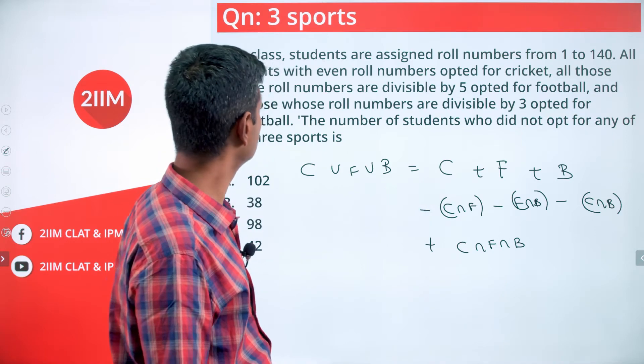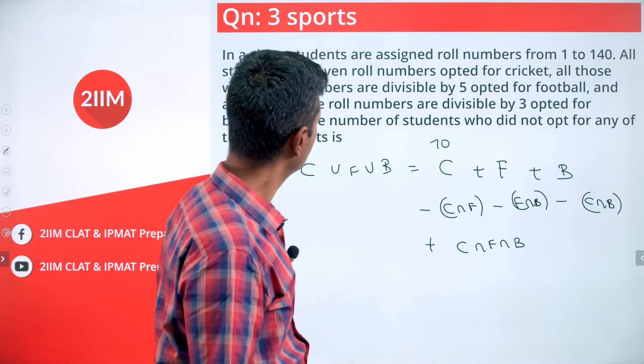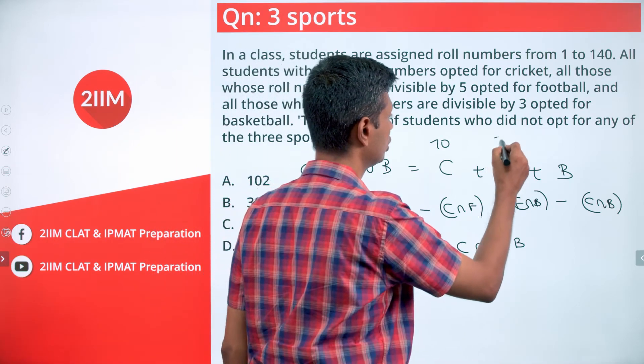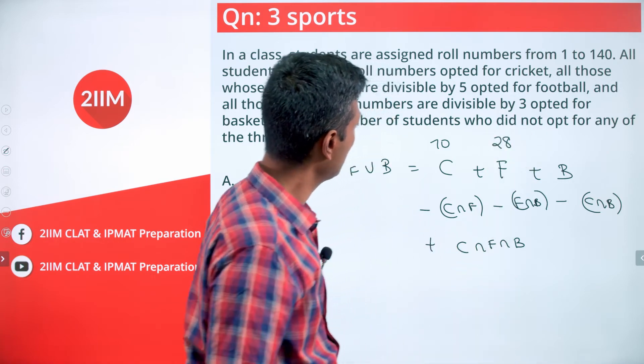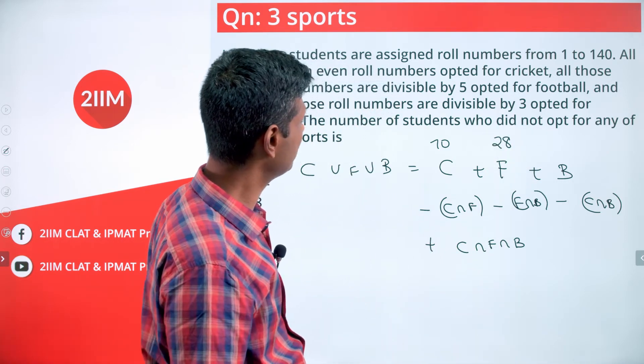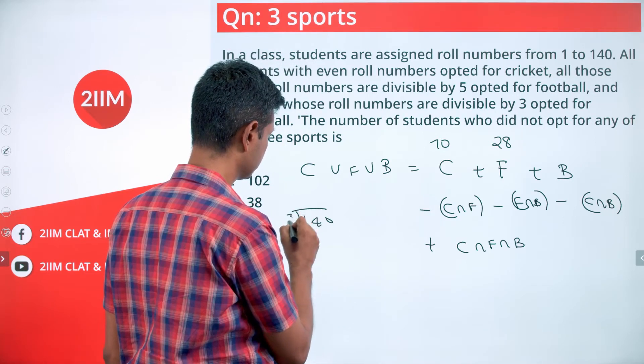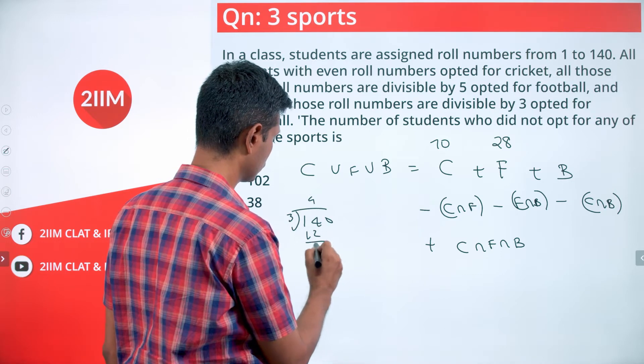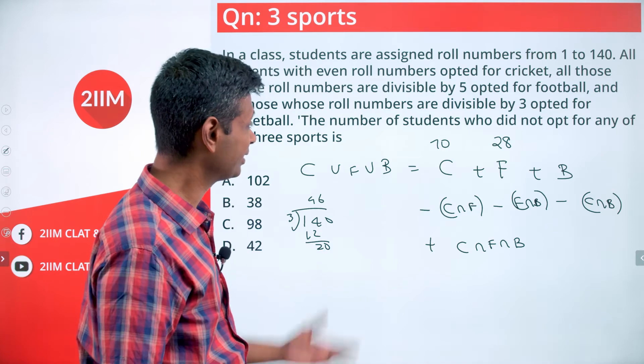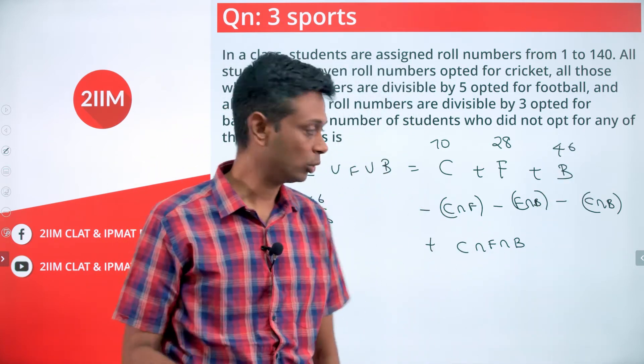Cricket is all multiples of 2, even numbers - 70 of them. Football is multiples of 5 (5, 10, 15, 20... to 140) - 28 of them. Basketball is multiples of 3. 140 divided by 3 gives 46 with remainder, so 46 multiples of 3 are in this list, since 46×3 = 138.